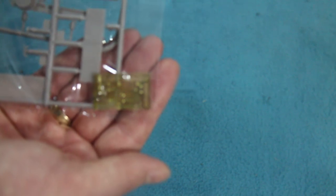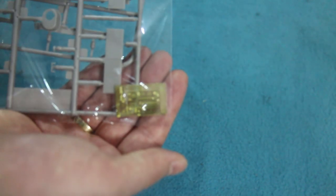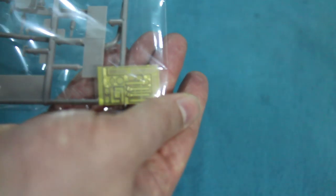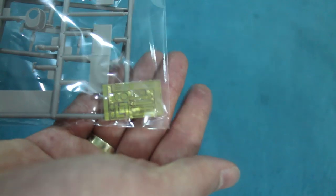And we also have a very small etched fret. I'm just determined not to focus on that. Right, there we go. A small etched fret with grills and stuff on it.